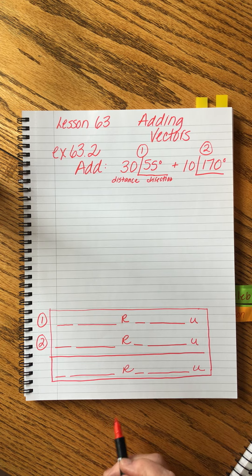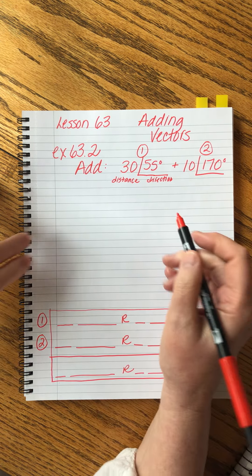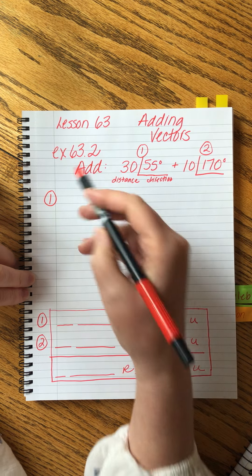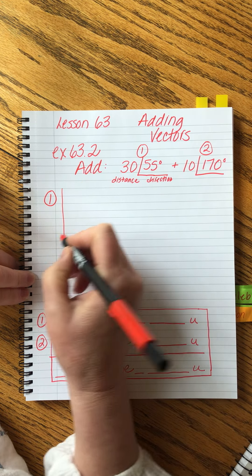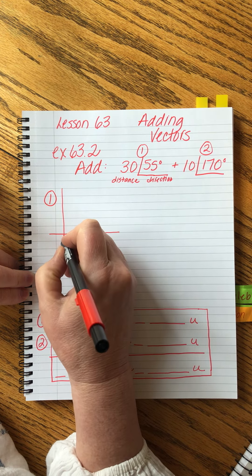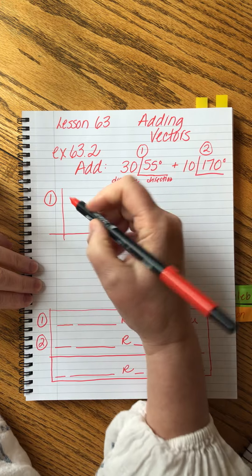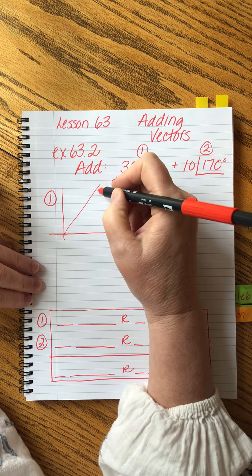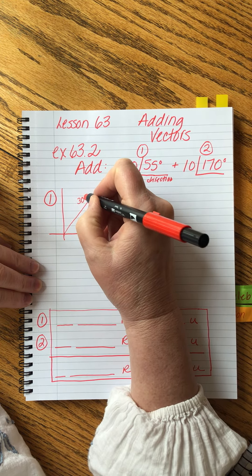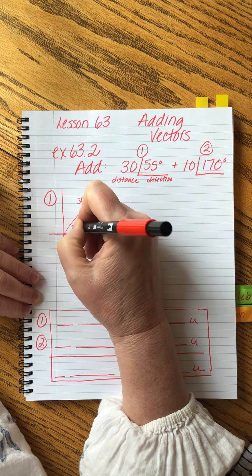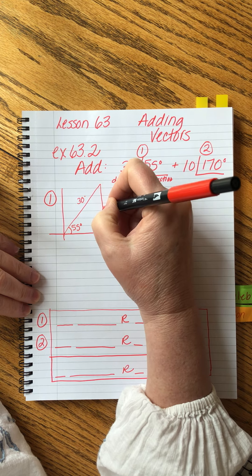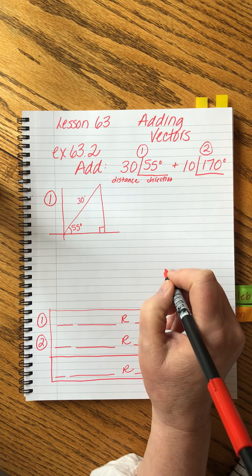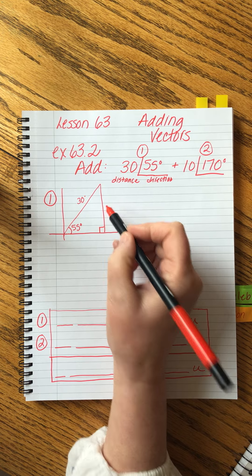To convert to rectangular, we always start by drawing a picture of the triangle. 55 degrees is in the first quadrant. I approximate the angle and draw it as I want. This is 30 units at 55 degrees. I drop a line back to the x-axis and make a right triangle. I want to find both legs: this side will be my right value, and this side will be my up value.